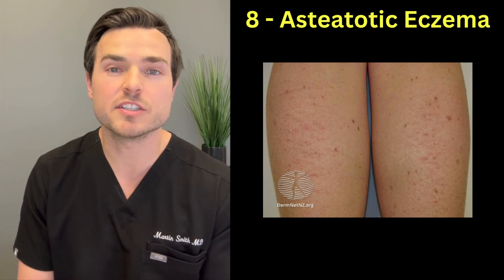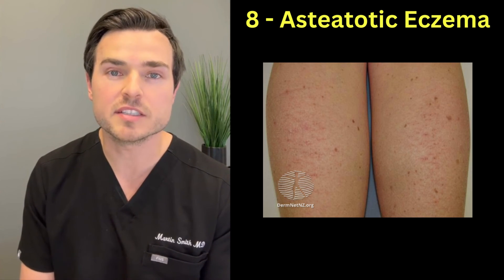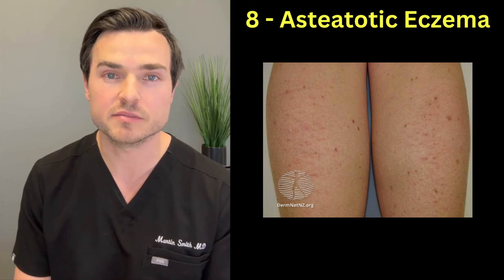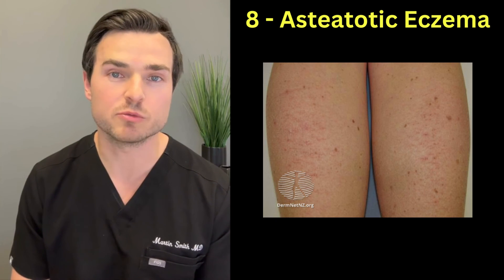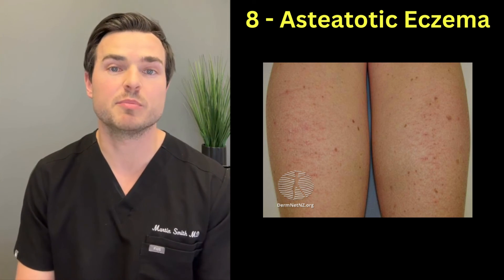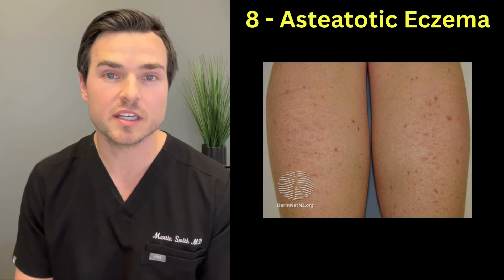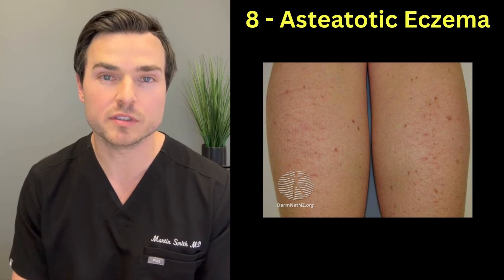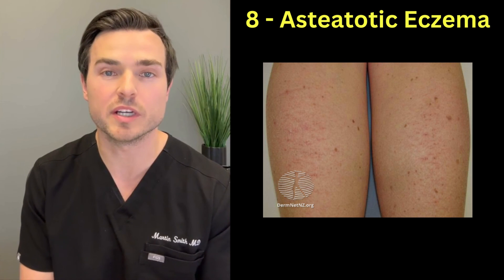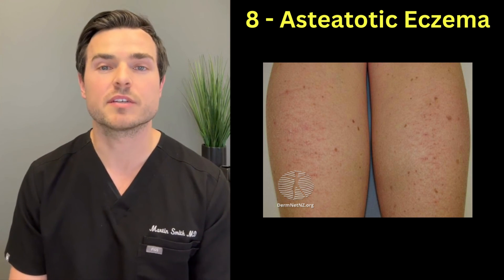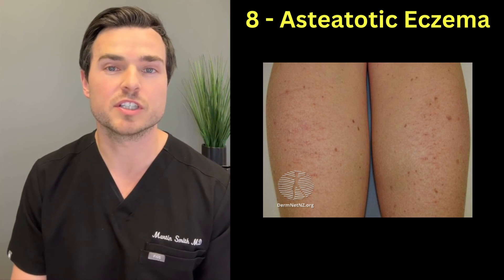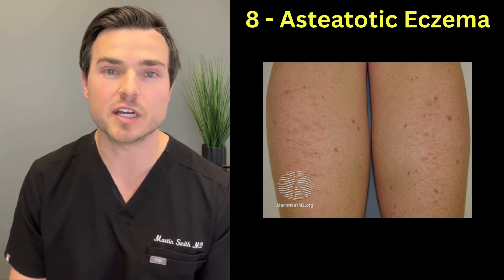Next up we have asteatotic eczema — eczema due to excessively dry skin, sometimes called dry cracked riverbed skin. It affects people with very dry skin who live in colder, drier parts of the world, and usually appears on the lower legs. The mainstay of treatment is decreasing that dryness — people with this condition often need to moisturize up to four to five times a day.